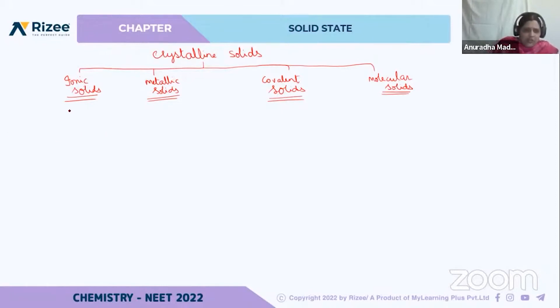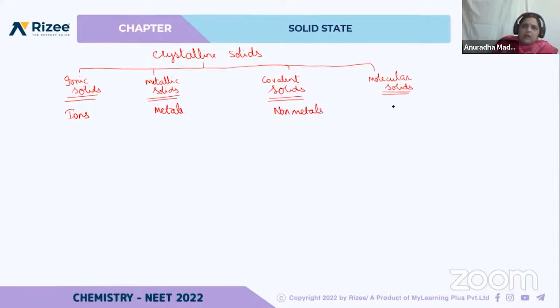So what are the main constituents present in each type? In ionic solids, the constituents are ions. In metallic solids, they are metals. In covalent solids, they are non-metals. And in molecular solids, they are molecules.